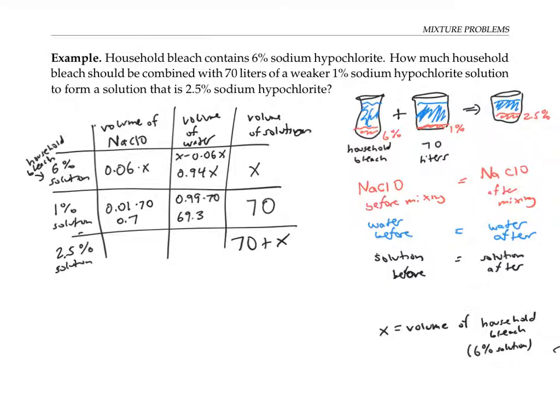Finally, for the 2.5% solution, the volume of the sodium hypochlorite is going to be 0.025 times the volume of solution 70 plus x. And the volume of water is going to be the remainder, so that's 0.975 times 70 plus x.